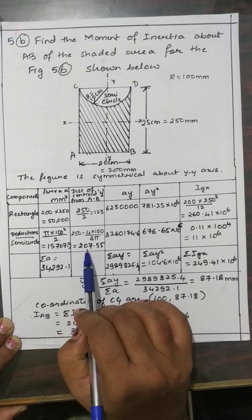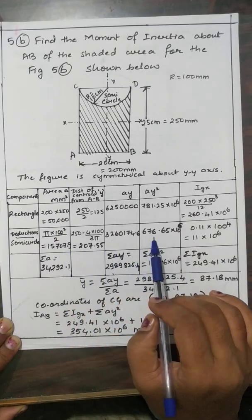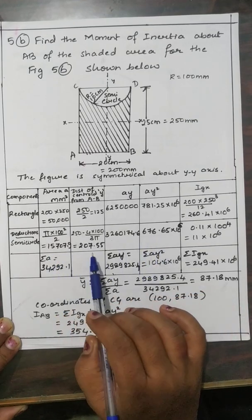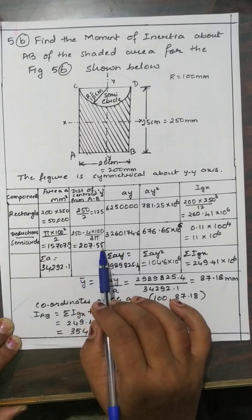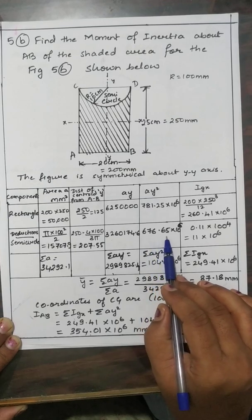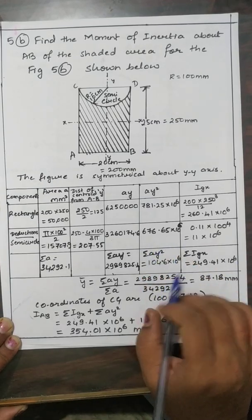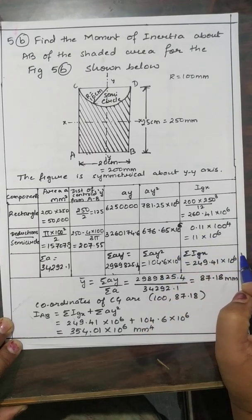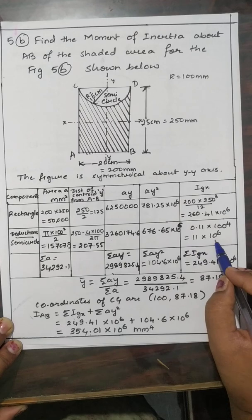Multiply the area by the centroid distance: A·Y = 15,707.9 × 207.55. Then A·Y² = 15,707.9 × 207.55² = 676.65 × 10⁶. The IGX for a semicircle is 0.11R⁴ = 0.11 × 100⁴ = 11 × 10⁶ mm⁴.